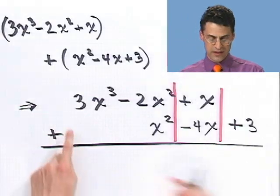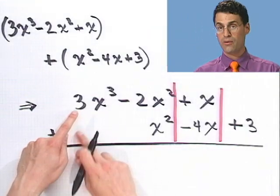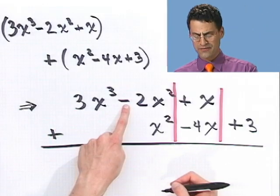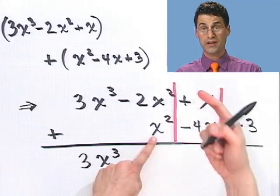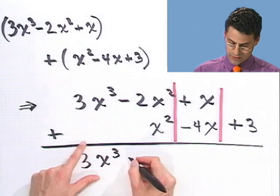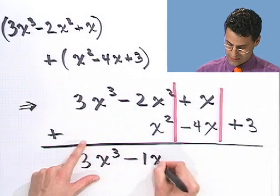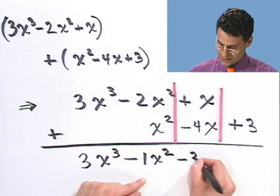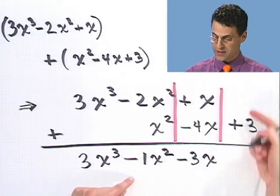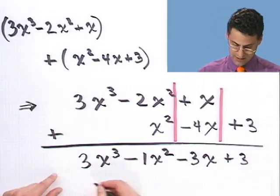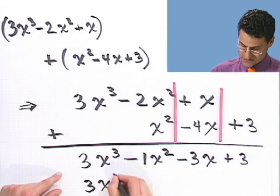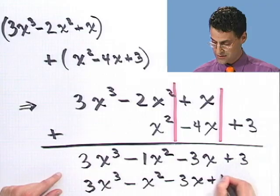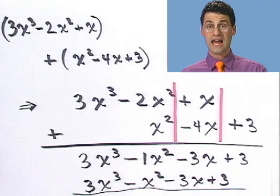And by doing this, now just add down. I have 3x³ and no x³ here, so when I add them up, I get 3x³. Here I have -2x², and then I am given an extra x². How many do I have? I have only -1x². Here I have an x, and I take away 4x's. That leaves me with -3x's. And then I have just nothing plus 3 is 3. And so I see a final answer of 3x³ - x² - 3x + 3. That's how easy it is to add.